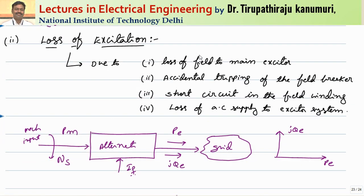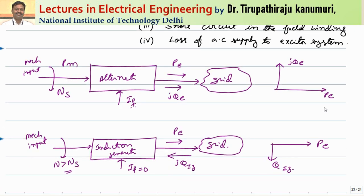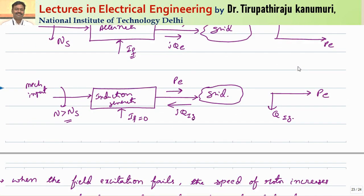The second type of problem in the rotor is loss of excitation. This can happen due to loss of field to the main exciter, accidental tripping of the field breaker, short circuit in the field winding, or loss of AC supply to the exciter system. Under normal operating conditions, field current is present, mechanical input PM is given, the rotor rotates at synchronous speed NS, and the alternator produces both active and reactive power supplied to the grid.